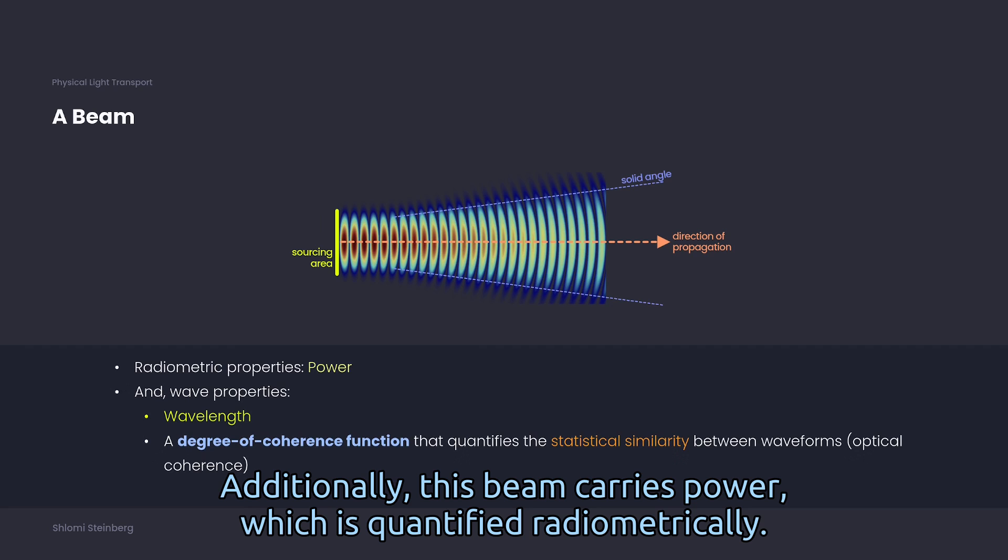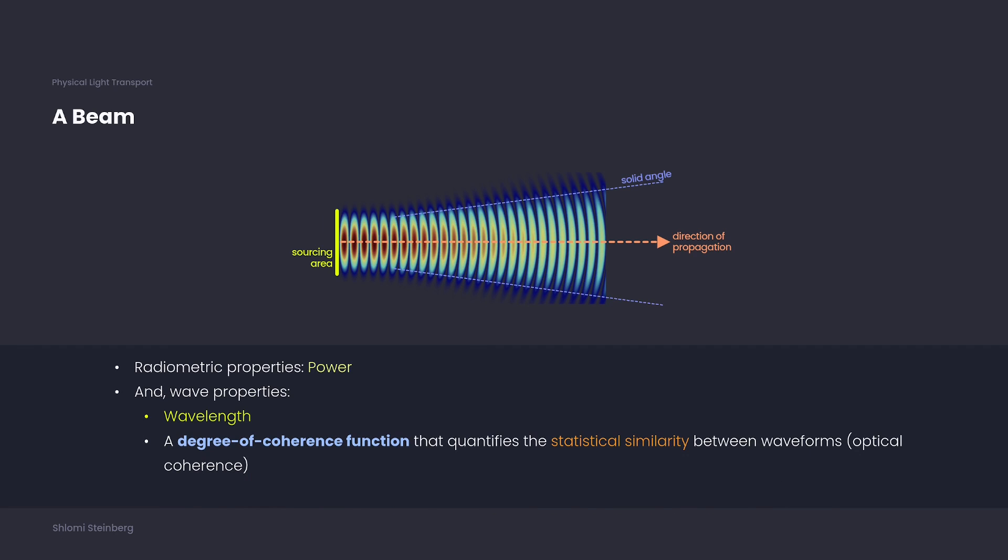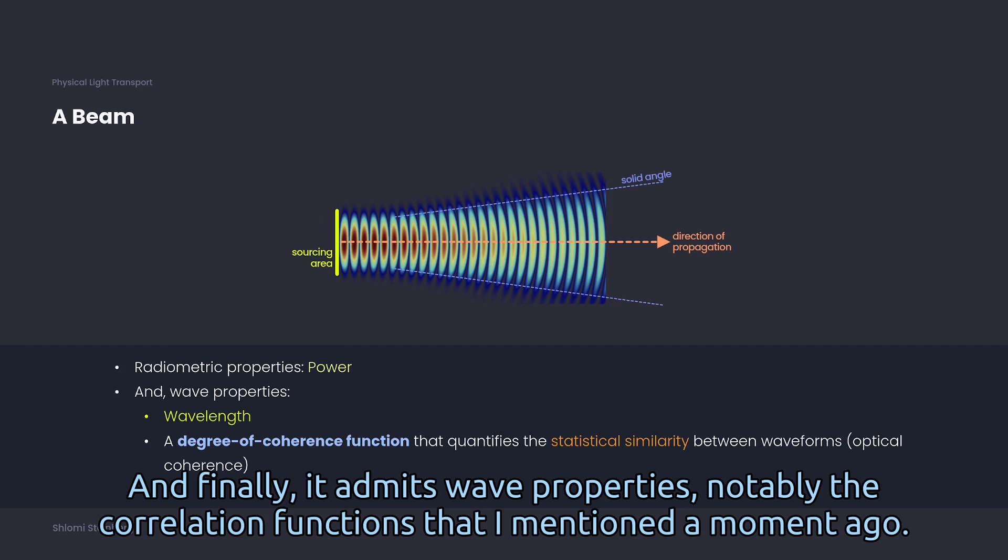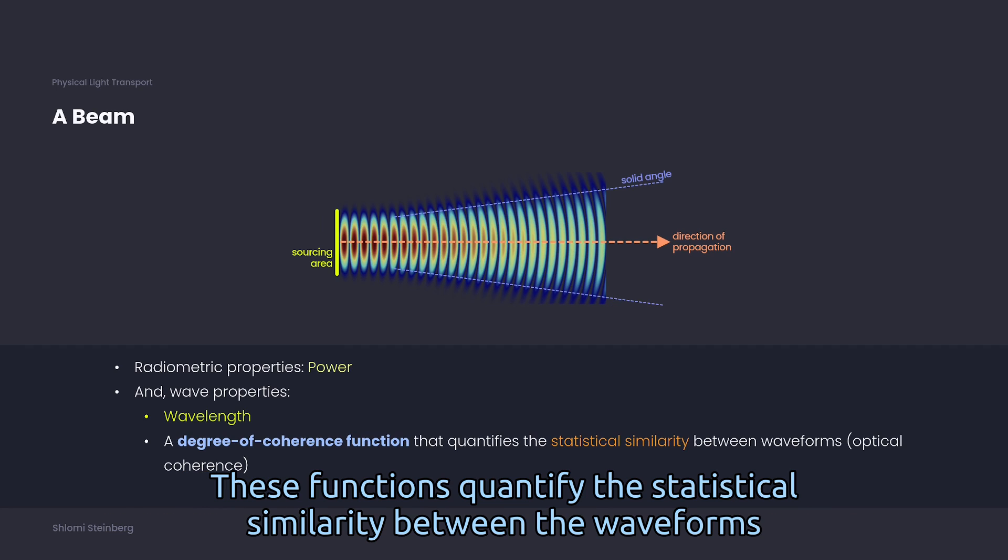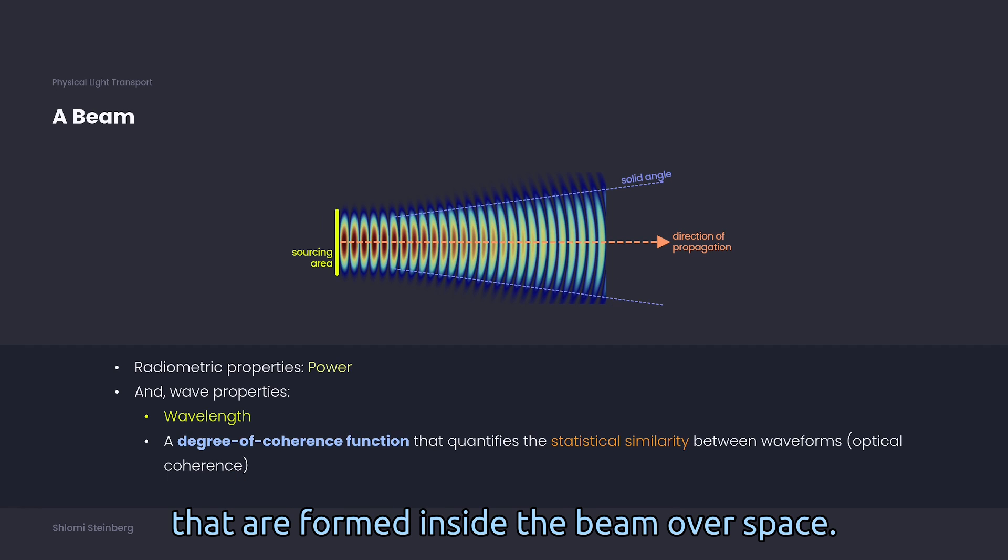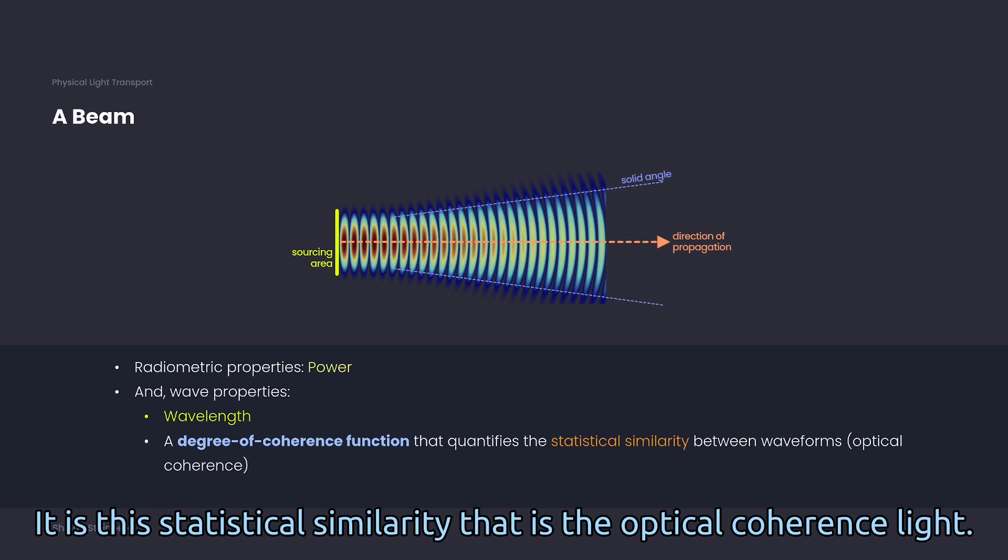Additionally, this beam carries power, which is quantified radiometrically. And finally, it admits wave properties, notably the correlation functions that I mentioned a moment ago. These functions quantify the statistical similarity between the waveforms that are formed inside the beam over space. It is this statistical similarity that is the optical coherence of light.